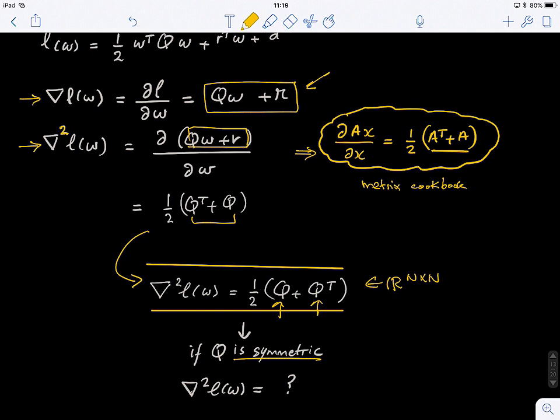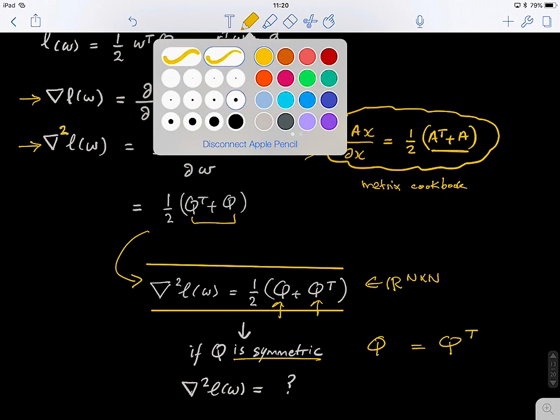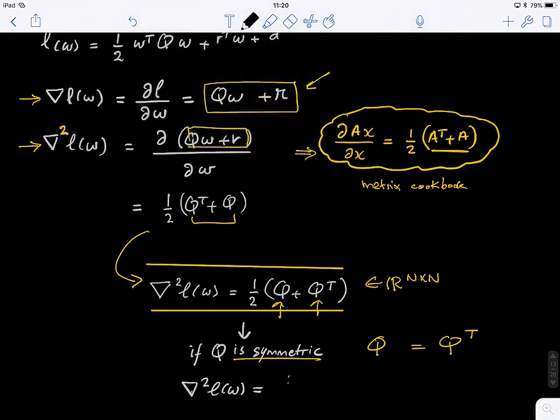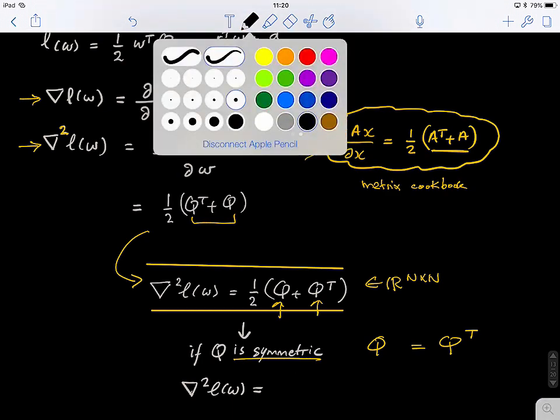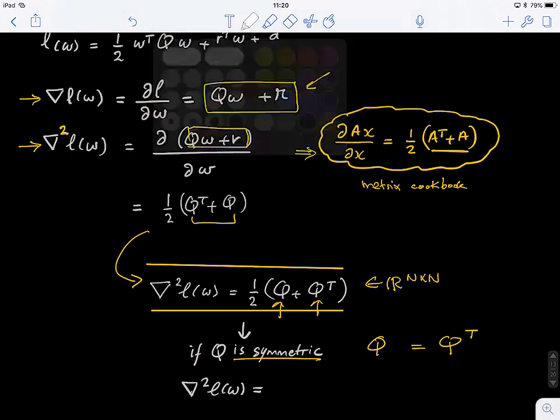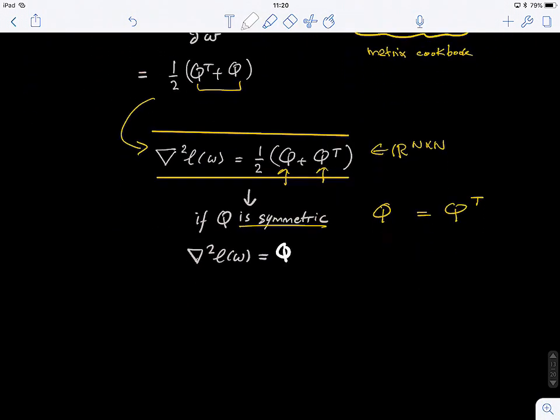If Q is symmetric, if the matrix is symmetric, if you flip it around, the transpose of Q is same as Q. In this case, the Hessian matrix will be equal to Q.